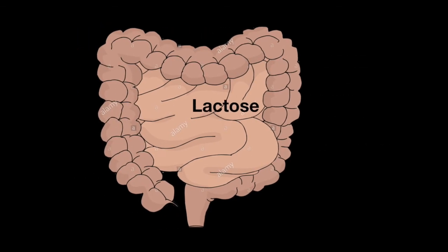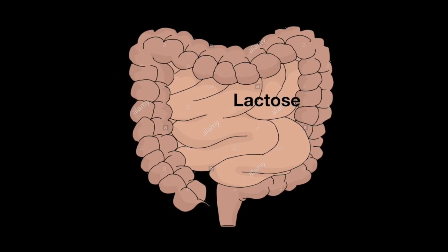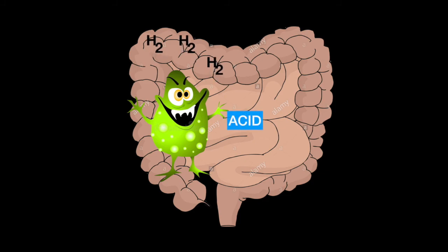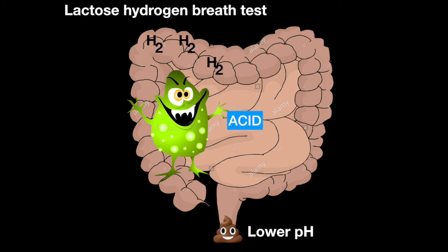Since your brush border enzymes aren't digesting the lactose, other microbes in your GI tract do. As they do, they create hydrogen gas and lower the pH. Thus, the stool will present with a lower pH, and the lactose hydrogen breath test will reveal elevated levels of hydrogen gas.